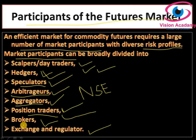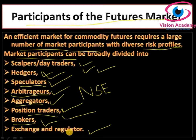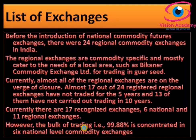Brokers typically act as intermediaries and facilitate hedgers and speculators. A commodity broker is a firm or individual who acts as an intermediary between buying and selling commodity contracts on behalf of clients. An exchange is a central place — physical or virtual — where market participants trade standardized futures contracts, and a regulator oversees the working of the exchange.